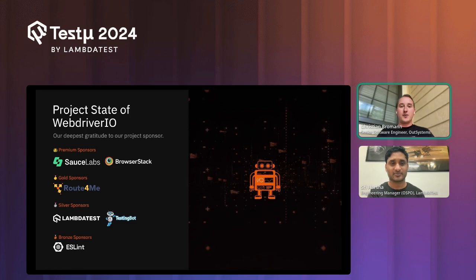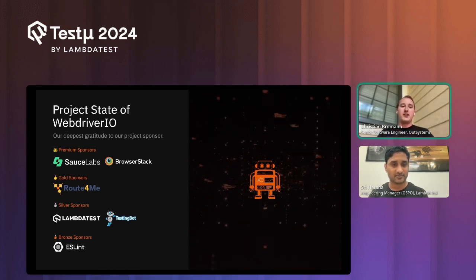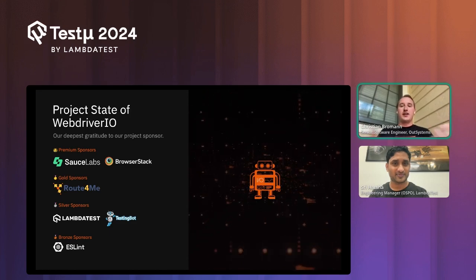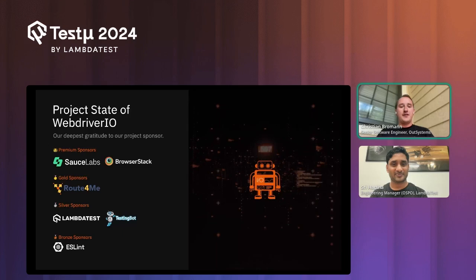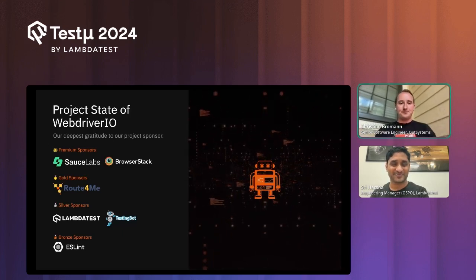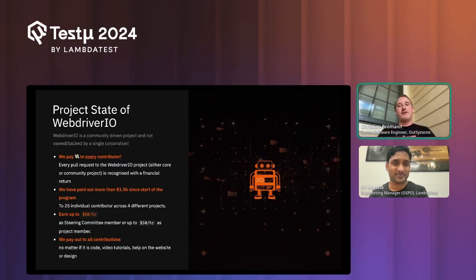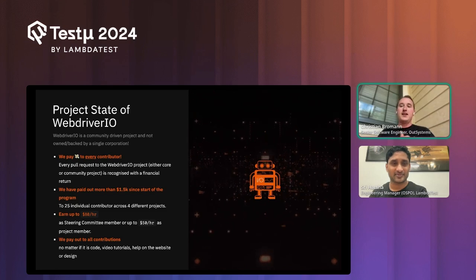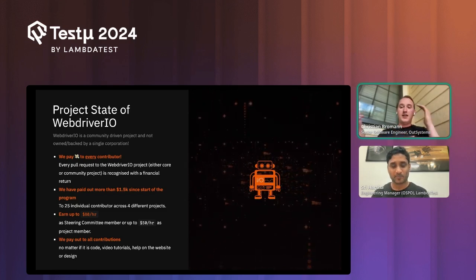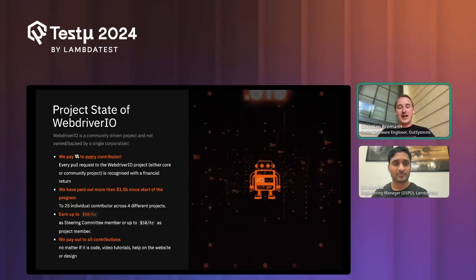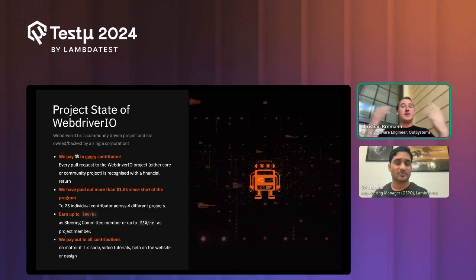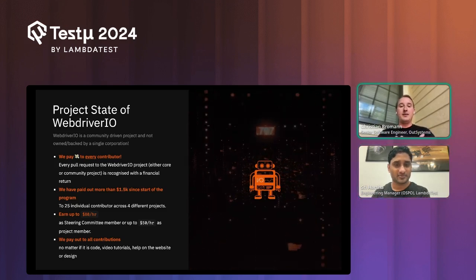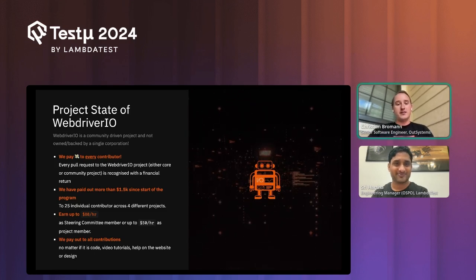We want to thank our sponsors who have helped the project's development — Sauce Labs and BrowserStack are our top sponsors, and LambdaTest is our silver sponsor who actually started the initiative to make sponsoring a thing in WebdriverIO. Every contributor gets paid: the reviewer attaches an amount based on complexity and time spent, so you can get between $15 and $200 per pull request. Since we started the stipend program we've paid out about $1,500, with more to go. Once you make more contributions you can join our team and earn up to $50–$80 an hour.